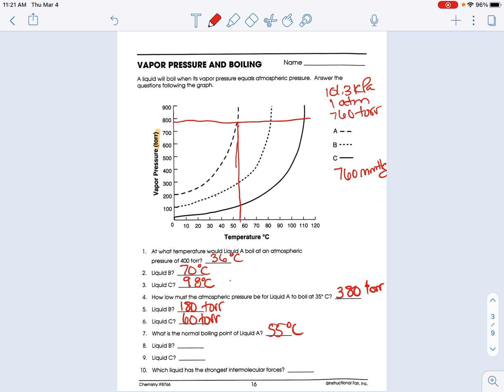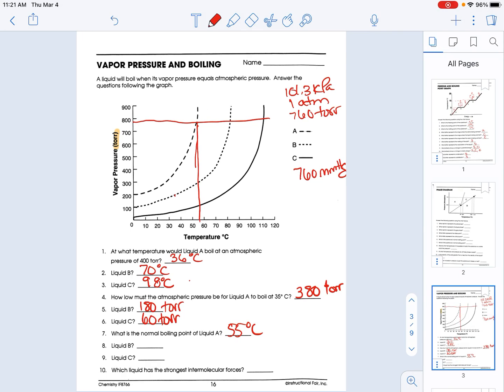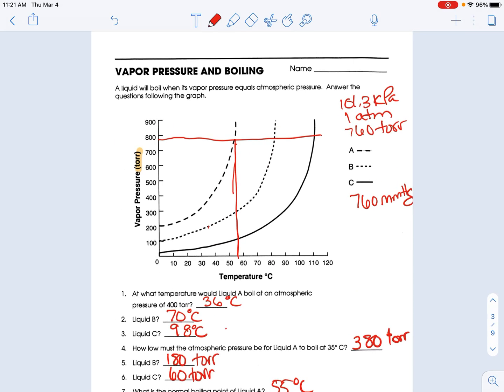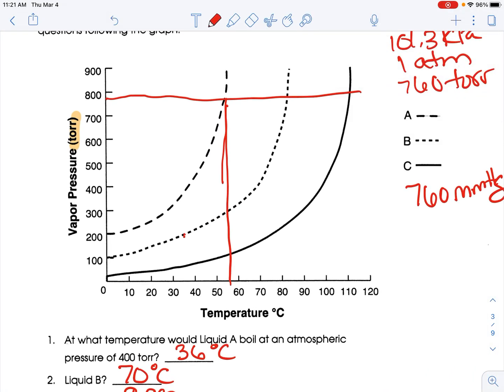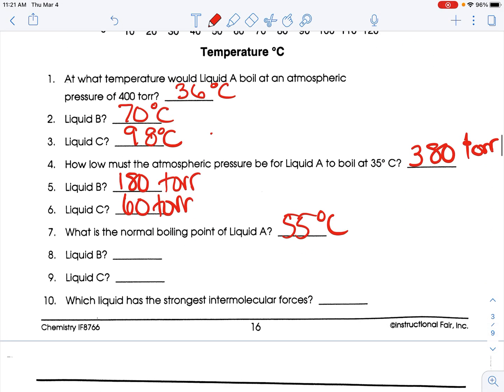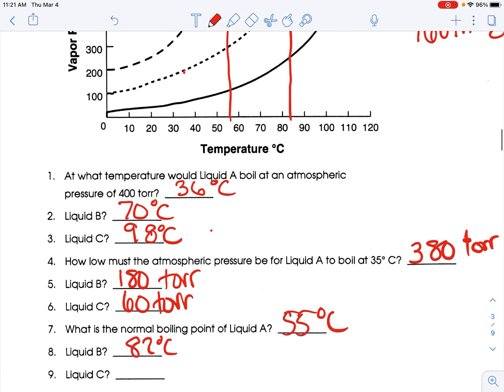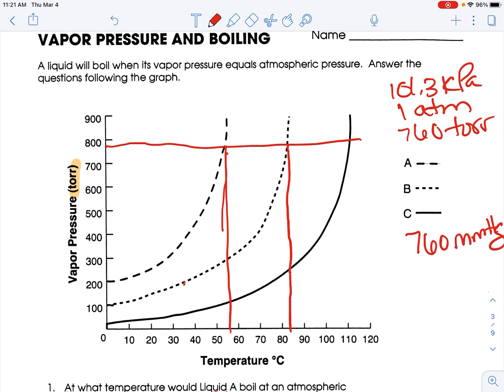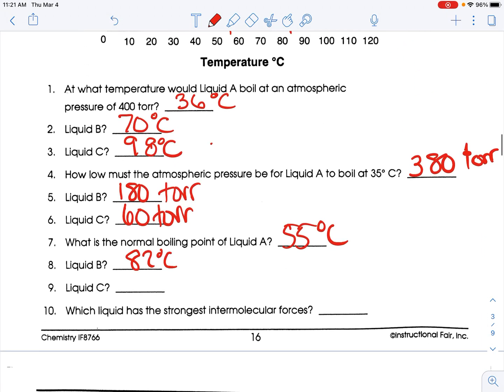I can't see it. Maybe I should zoom in a little bit better. There we go. Let's see if this helps. Hmm. 82 maybe? I don't know. Liquid C. 110. Give or take.